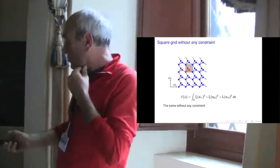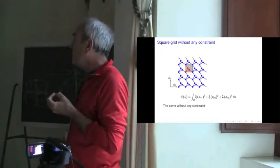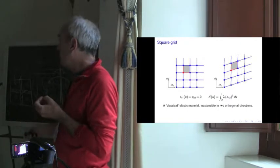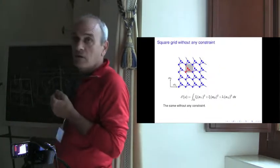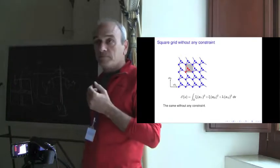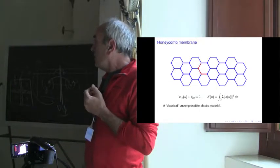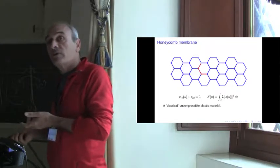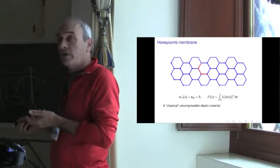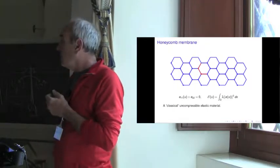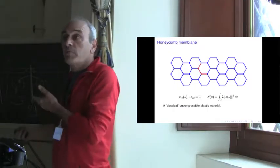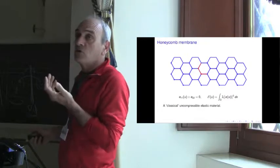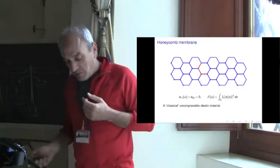Now, maybe you don't like the constraint — you can erase it. You replace all the bars here, the vertical bars and horizontal bars, by some zigzag, and then you get something which is now a complete classical elastic material. And now, what about the OECOM membrane? It is known for special properties, so I checked if it was a second gradient material, but no. You find a constraint which is a volume constraint, and then you pay for the remaining parts — the three parts of the deformation. So it is a classical elastic material, but with a constraint of incompressibility. It is a membrane, a 2D model.